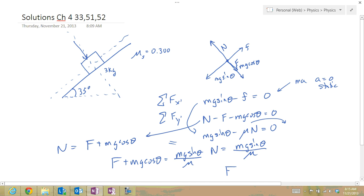Solving for F, F equals mg sine theta divided by mu minus mg cosine theta. I should now have all of that information.